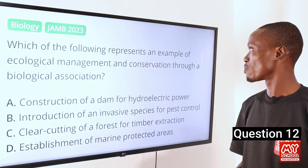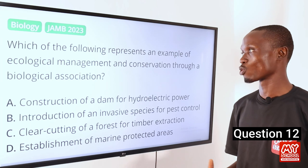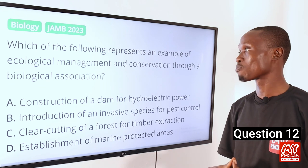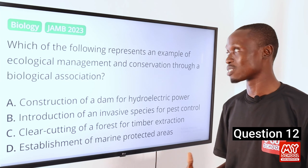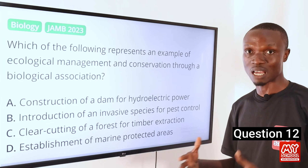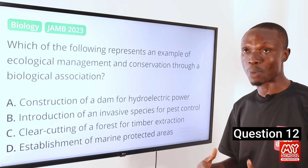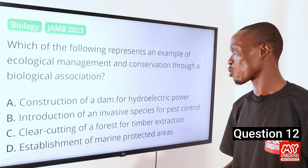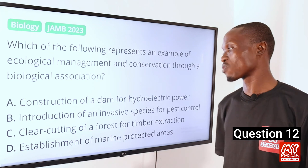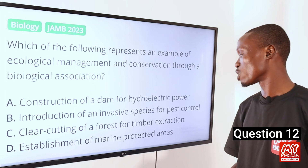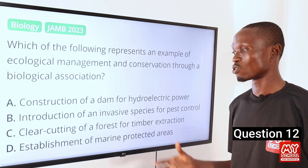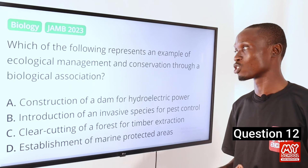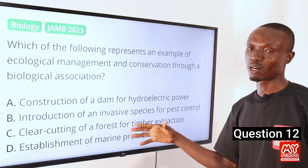Question 12. Which of the following represents an example of ecological management and conservation through a biological association? Ecological management and conservation refers to strategies aimed at preserving and protecting natural ecosystems and biodiversity. Options include: A, construction of a dam; B, introduction of an invasive species; C, clear cutting of a forest; D, establishment of marine protected areas. The answer is option D, establishment of marine protected areas.